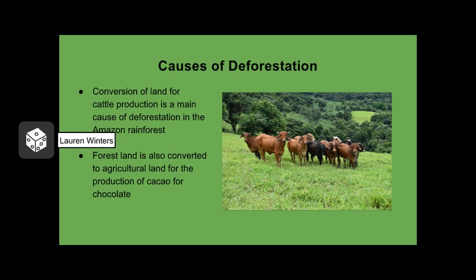One of the main reasons for the burning of the rainforest is to convert the land for agricultural use. One of the largest uses is for cattle ranching, due to the world's demand for beef. Another large contributor to the deforestation of the Amazon rainforest is the conversion of land for cacao production for chocolate companies around the world. Some other main sources are the creation of highways, coffee plantations, and logging.